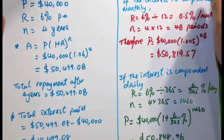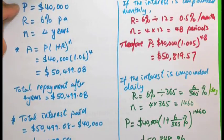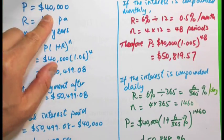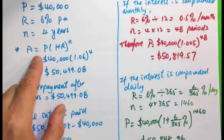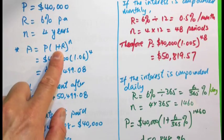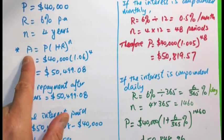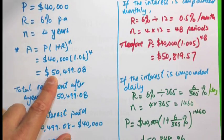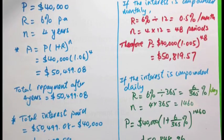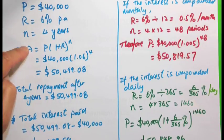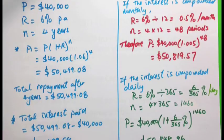In the first situation, where interest is compounded yearly: P is $40,000, r is 6% per annum, and n is 4 years. Applying the formula, the total amount of the loan comes to $50,499.08. The total interest is A minus P, which is $10,499.08.